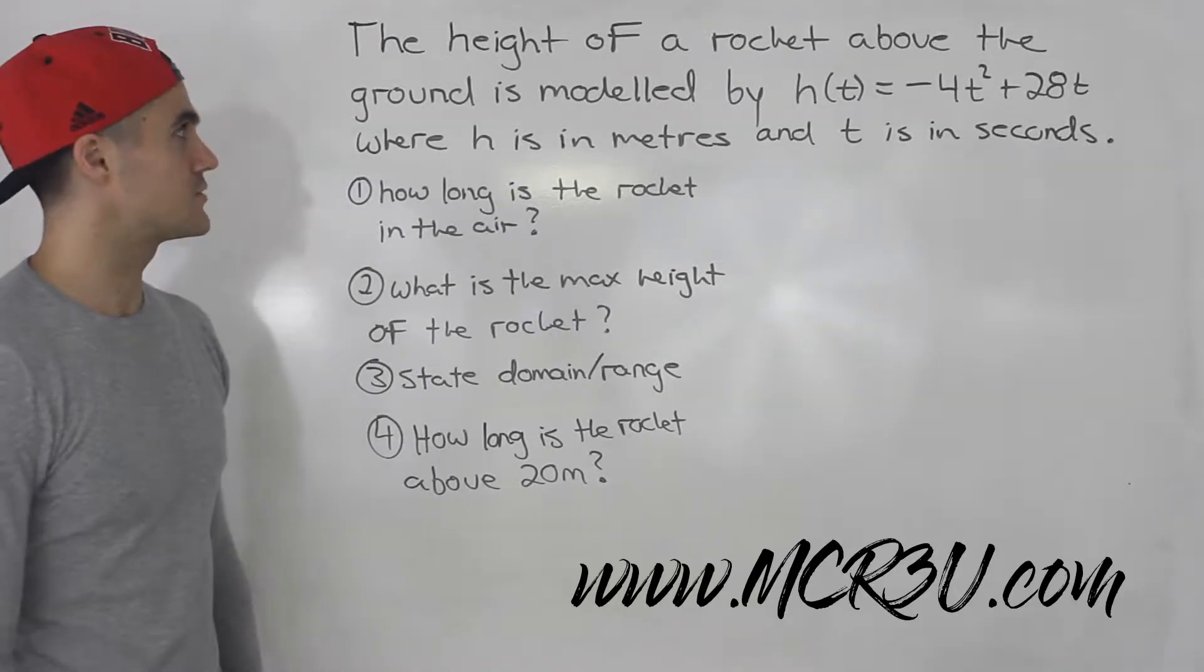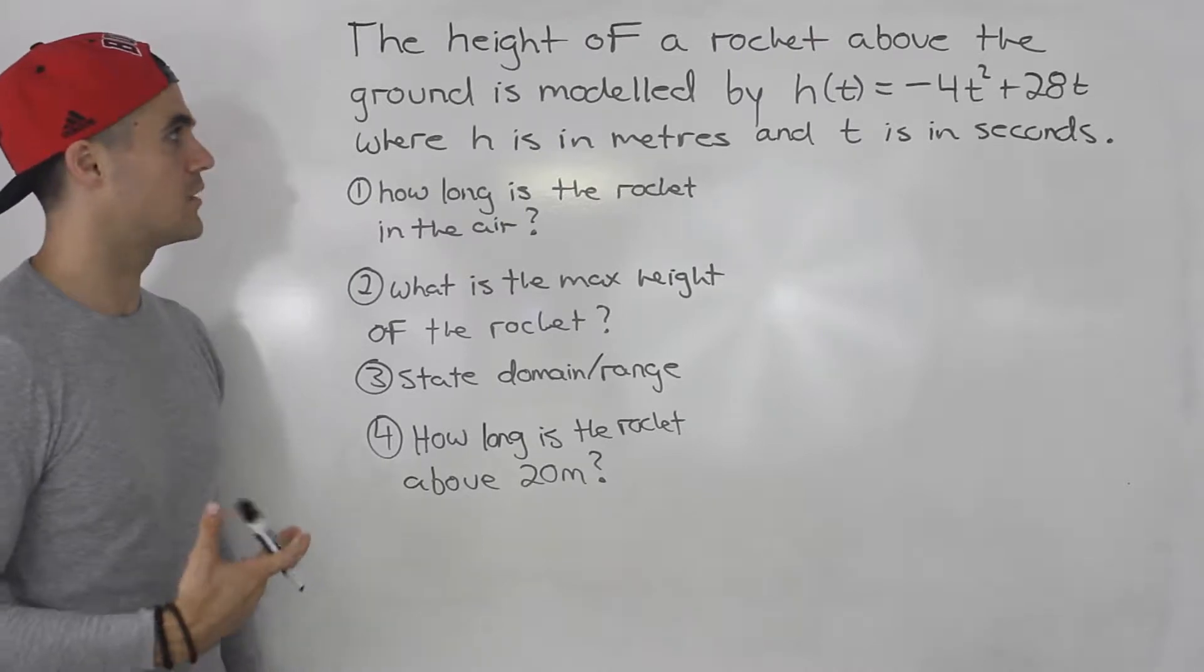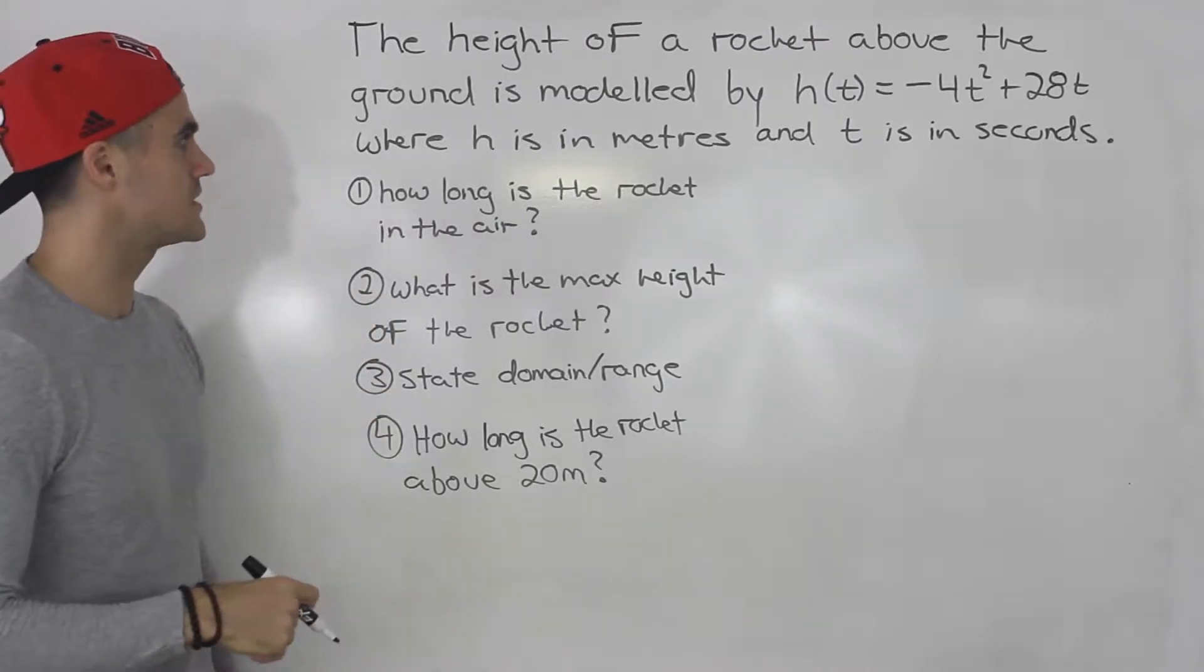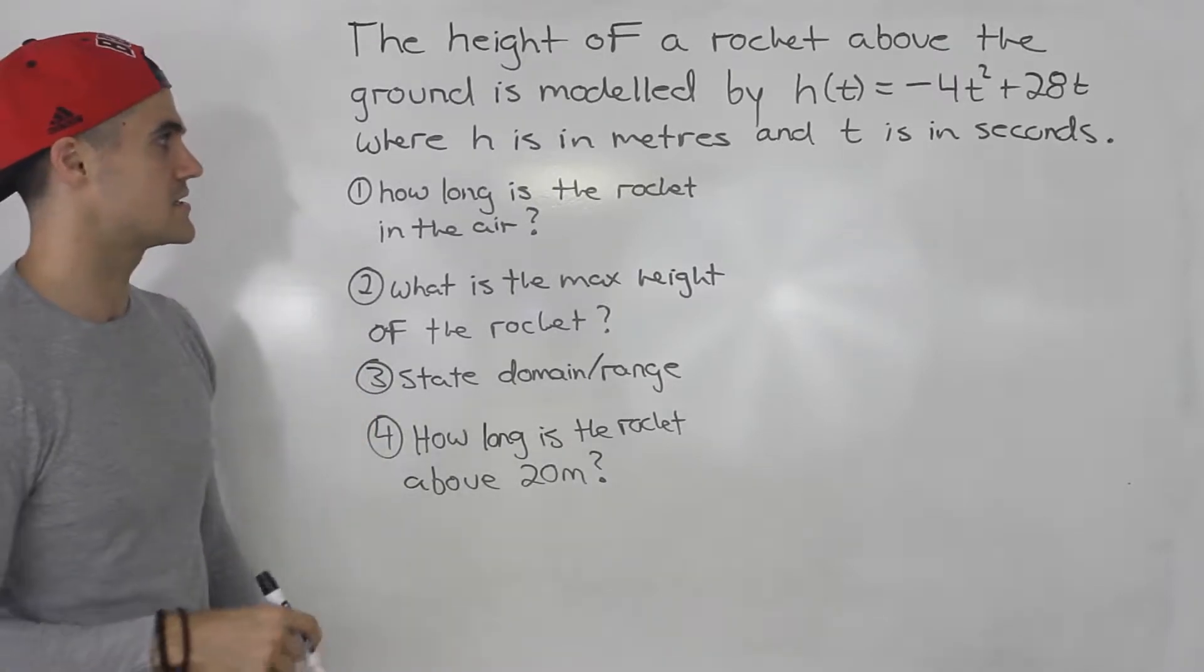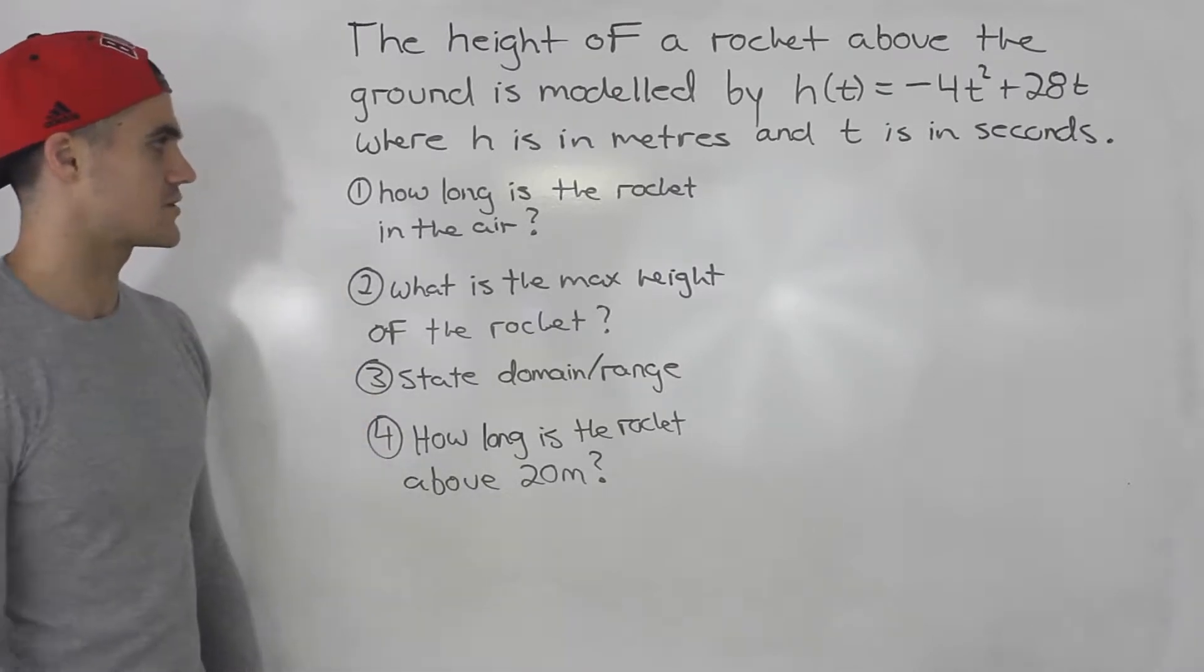What's up everybody? Welcome back. Moving on to the next question. This is a word problem. The height of a rocket above the ground is modeled by h(t) = -4t² + 28t, where h is in meters and time is in seconds. We have a couple of questions to answer here.